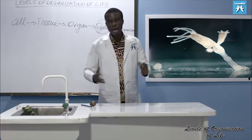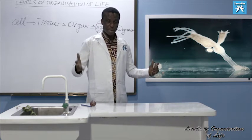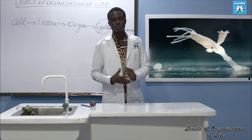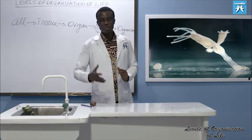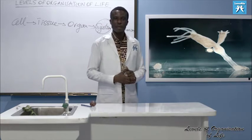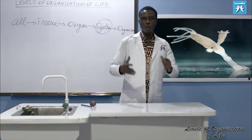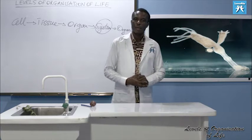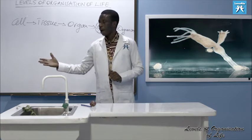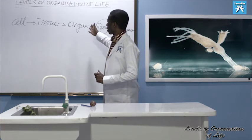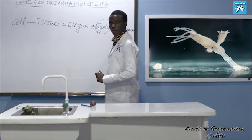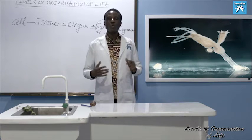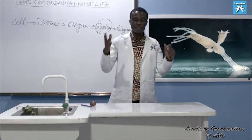Cellular level: amoeba. Tissue level: hydra. Organ level: onion bulb, rhizome of ginger. Then jumping over to organism level: guinea pig, rabbit, cockroach — all insects are examples.